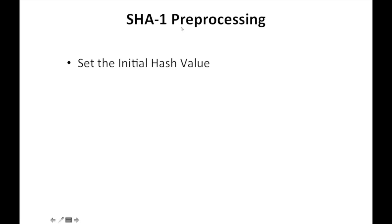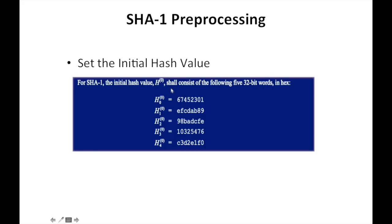The SHA-1 pre-processing involves two steps. The first step is called the initial hash value, where we have a list of constants defined — in this case, five initial values are defined. This initial hash value will change based on the algorithm used.